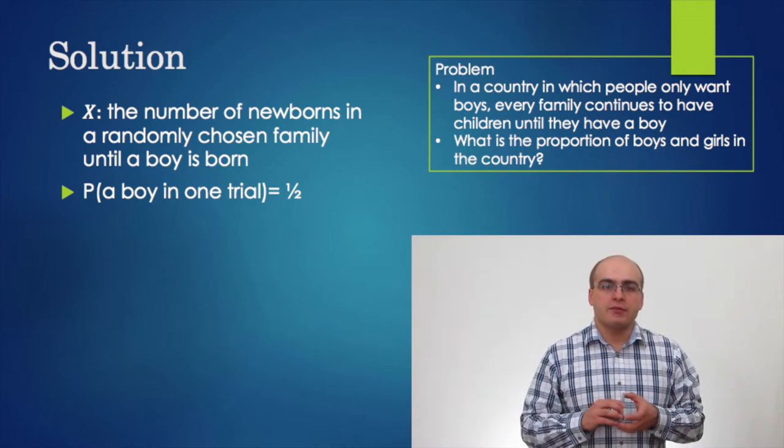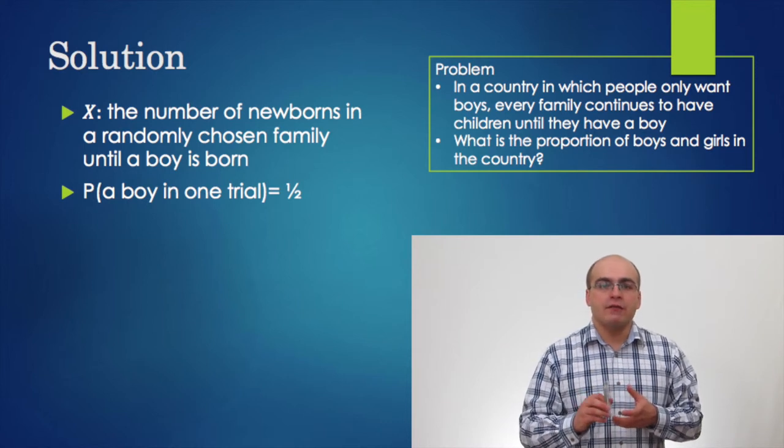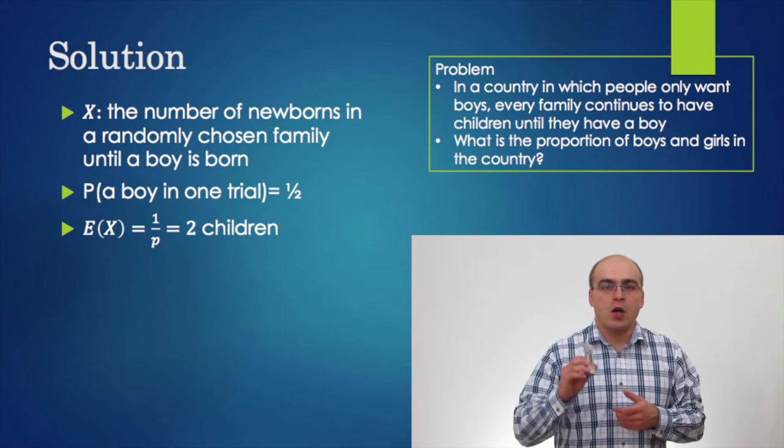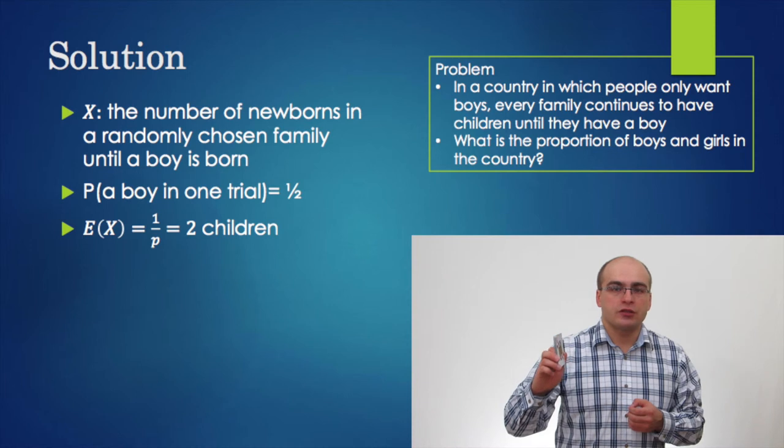Applying the formula of the expected value of the geometric random variable, we obtain that on average, the family has E of x equals 1 divided by the probability, which is 2 children.